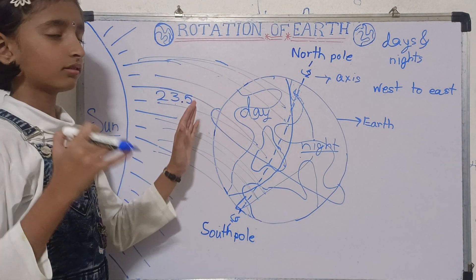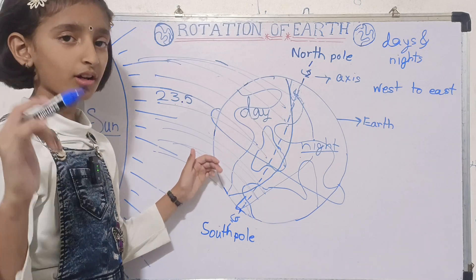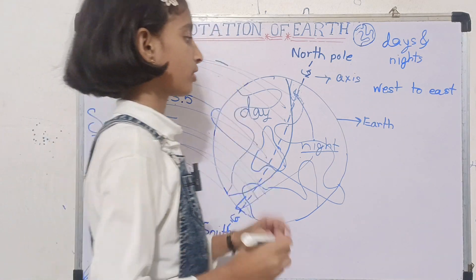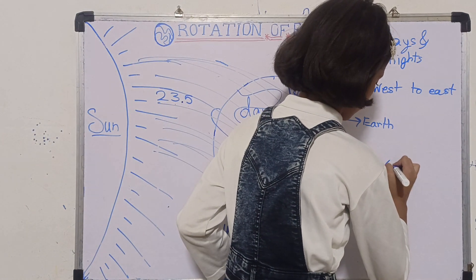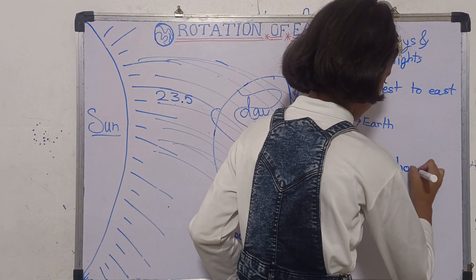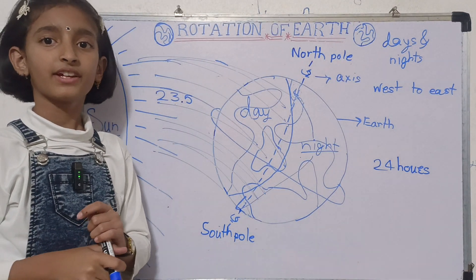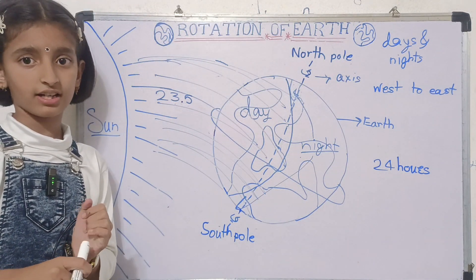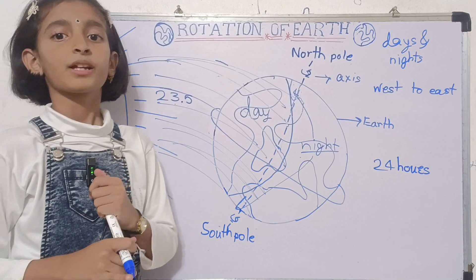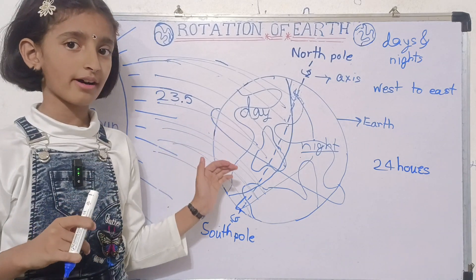The Earth takes 24 hours to complete one rotation, and because of this we have 24 hours in our one day. So today's lesson is over. Please like, share, and subscribe to our channel.